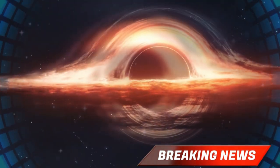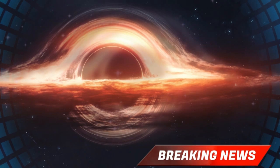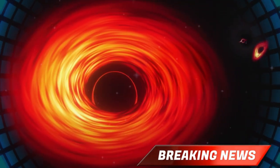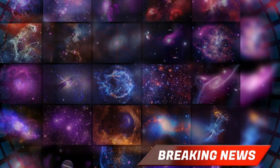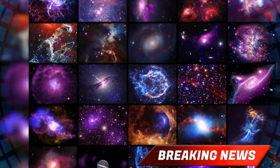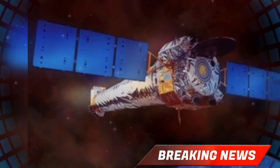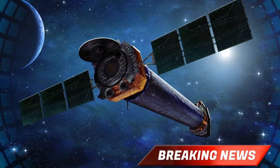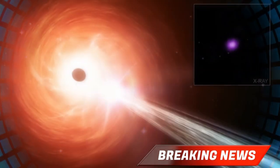This isn't the first time scientists have spotted black holes growing faster than expected, but discoveries like this are adding weight to the idea that the early universe played by different rules. The James Webb Space Telescope has also hinted at other supermassive black holes forming much earlier than we thought possible. Together, these findings suggest that the seeds of the cosmos were growing at turbo speed, creating giants that shaped the evolution of galaxies from the very beginning.